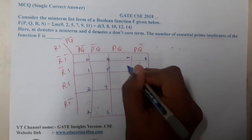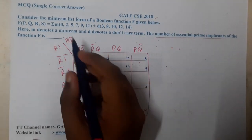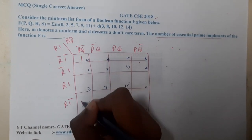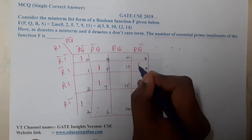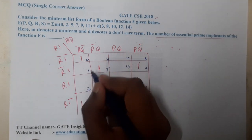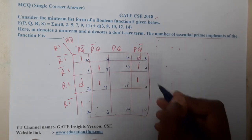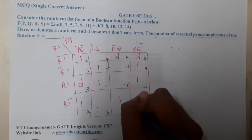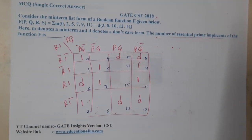Continuing the cell numbers: 11, 12, 13, 14, and 15. Now let us mark the minterms: at 1, 2, 5, 7, 9, 11. And the don't care conditions at: 3, 8, 10, 12, and 14.